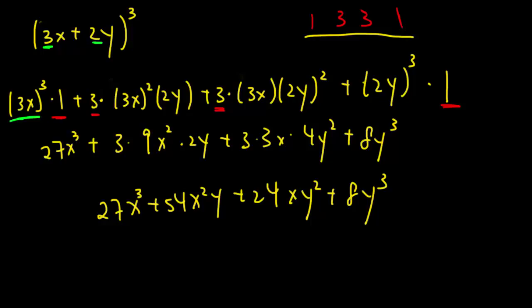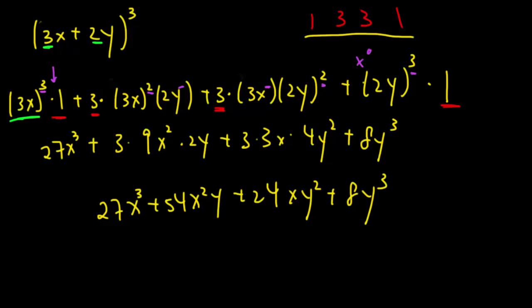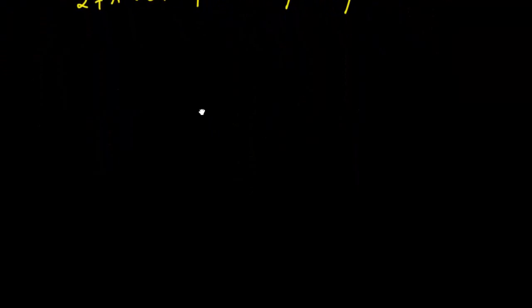The last point is that the powers are always going down — you can see the powers go 3, 2, 1, and then 0, so I don't have an x at the last term. And then y goes from y to the power of 0, up to y to the power of 1, y squared, and y cubed. I hope you guys understand. If you have any questions, please feel free to drop me a question on the discussion board and I'll get back to you as soon as possible. I'll see you guys in the next lecture.